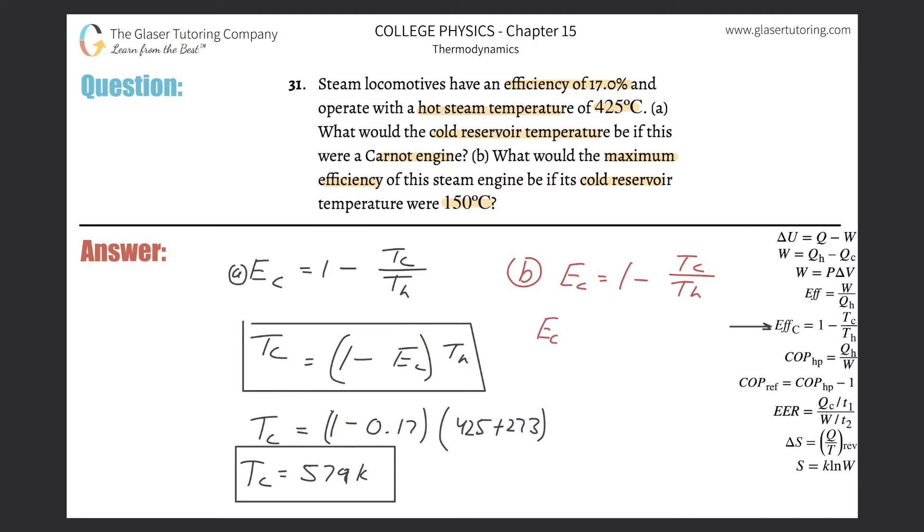And all we have to do now is plug in the temperature of the cold reservoir. They gave us 150. So remember we have to convert that into Kelvin, so we're going to add 273 to that. And then divide it by the temperature of the hot, which again was 425 degrees Celsius plus 273. And mathematically these do not cancel. If they were multiplied, then you could cancel them. But when they're added, they are not.